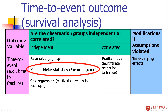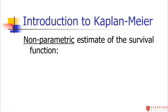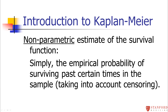So now I'm going to review the Kaplan-Meier statistics. The Kaplan-Meier curve is a non-parametric estimate of the survival function. All that means is that we're not trying to say this survival function follows an exponential distribution or a specific shape. We're just defining the survival function whenever events occur. It's an empirical estimate — what is the probability of surviving past certain times in the sample, taking into account censoring.